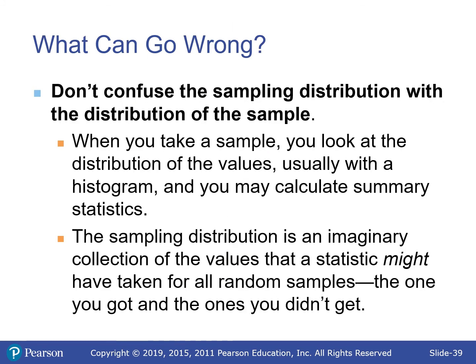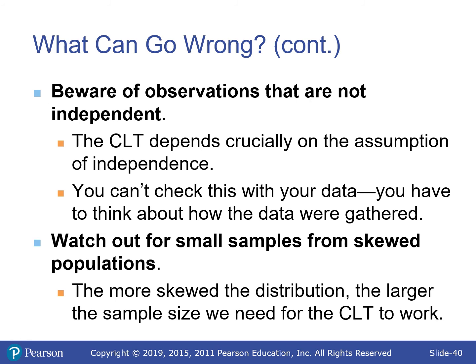What could go wrong? Don't confuse the sample distribution with the distribution of the sample. The distribution of the sample is what we looked at in the first chapters. The sampling distribution is what we're looking at now: we take a sample, and that summary statistic about the sample becomes the data point in this new distribution.